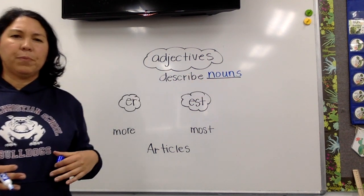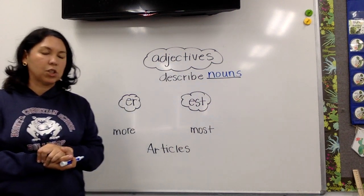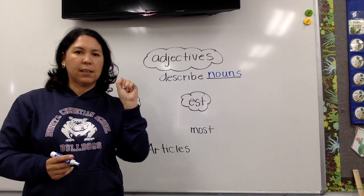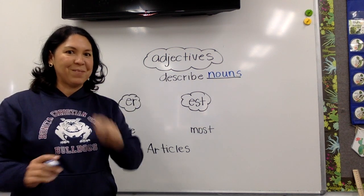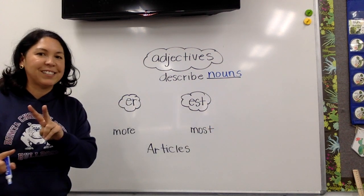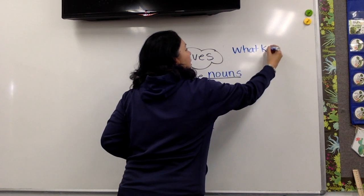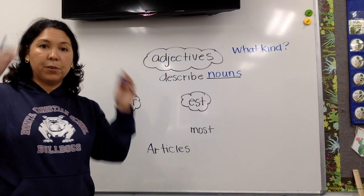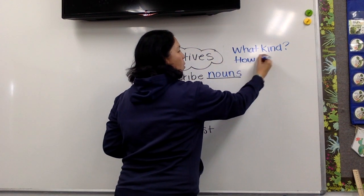There are two questions adjectives answer — this was back to day one. They tell us what something is and how something. Looking for those star students out there: who knows the two questions adjectives answer? They answer 'what kind?' — remember when I did like what kind of flag it was? It was red, white, blue, rectangular, medium-sized. And it answers 'how many.'